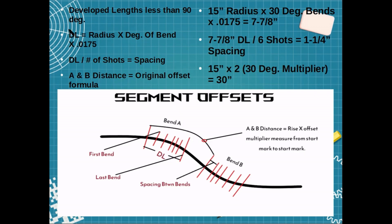Here's the formula: DL means developed length. The developed length equals the radius times the degree of bend times 0.0175. First, figure out what the radius is for your two bends — Bend A and Bend B. Once you have that information, fill in the formula and it'll give you the developed length.